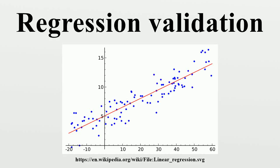In statistics, regression validation is the process of deciding whether the numerical results quantifying hypothesized relationships between variables obtained from regression analysis are acceptable as descriptions of the data. The validation process can involve analyzing the goodness of fit of the regression.